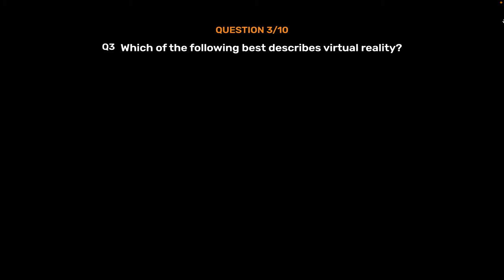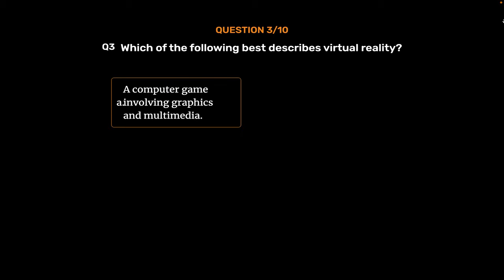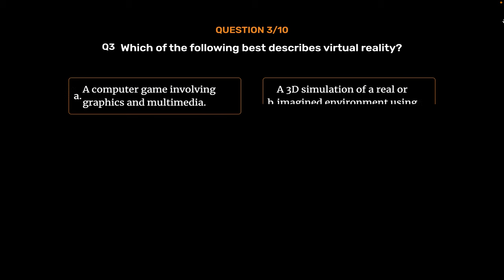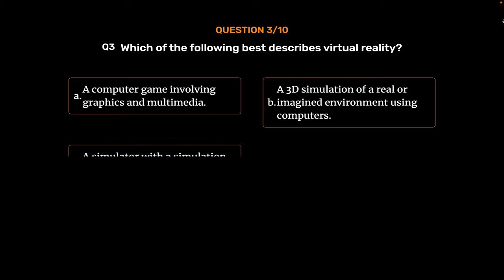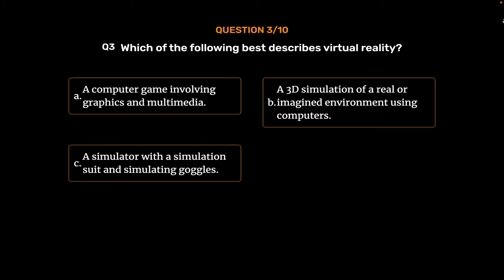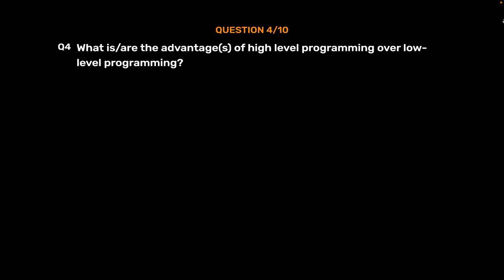Expansion Bus. Question No. 3. Which of the following best describes virtual reality? Option A: A computer game involving graphics and multimedia. Option B: A 3D simulation of a real or imagined environment using computers. Option C: A simulator with a simulation suit and simulating goggles. Option D: All of these. The correct answer is Option B: A 3D simulation of a real or imagined environment using computers.